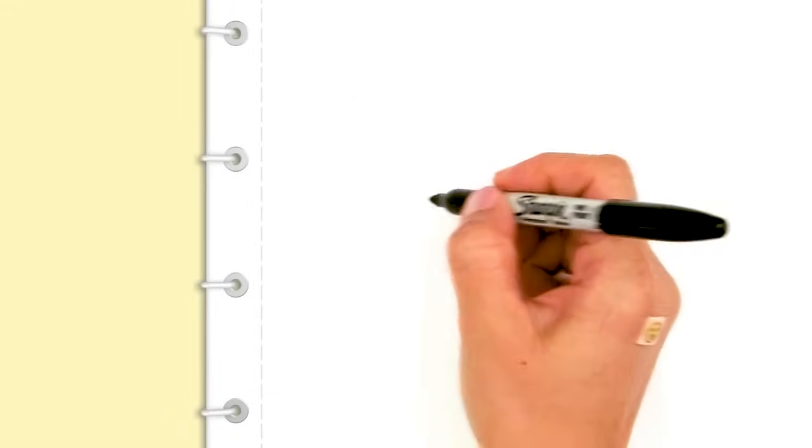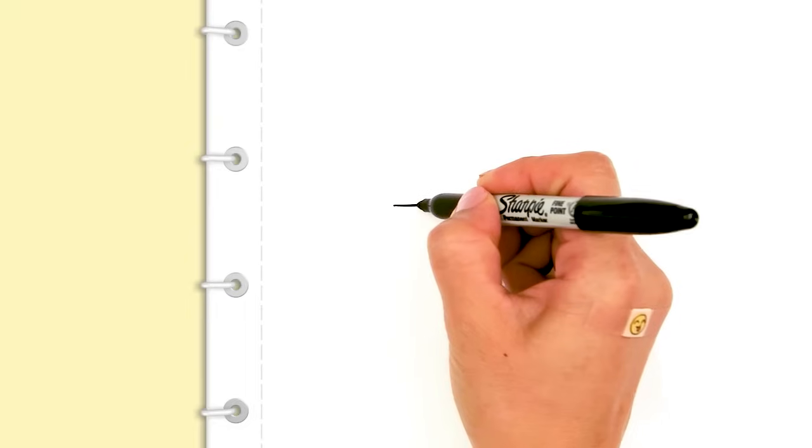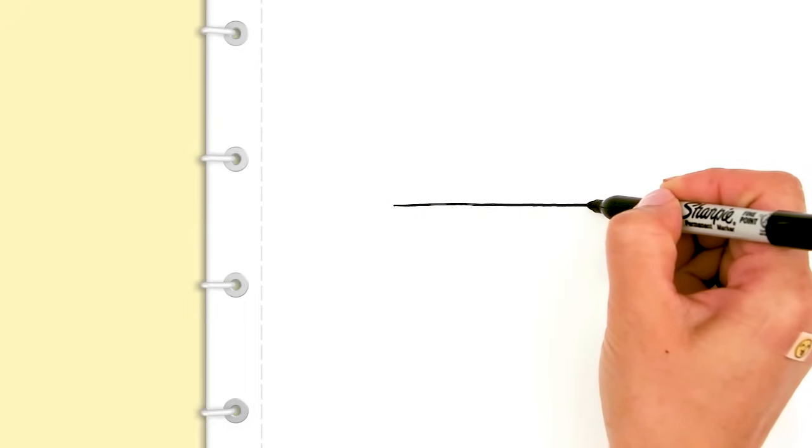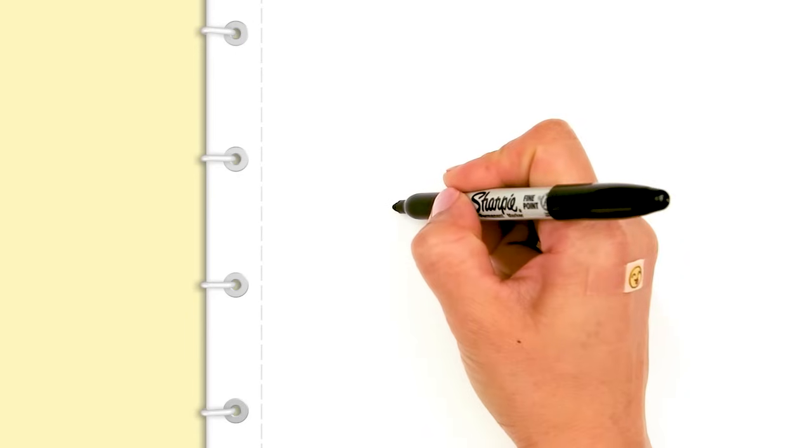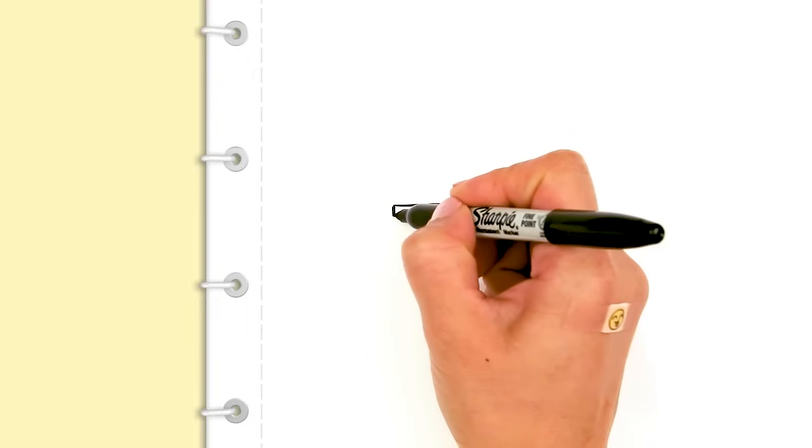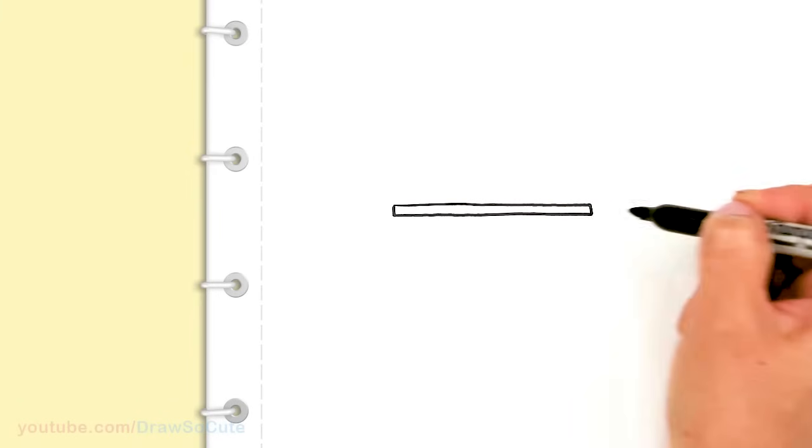To draw this boba drink, we're going to first start by drawing a straight line. So this is going to be the lip of our cap right here. About that much. And I'm just going to basically draw a thin rectangle from there.